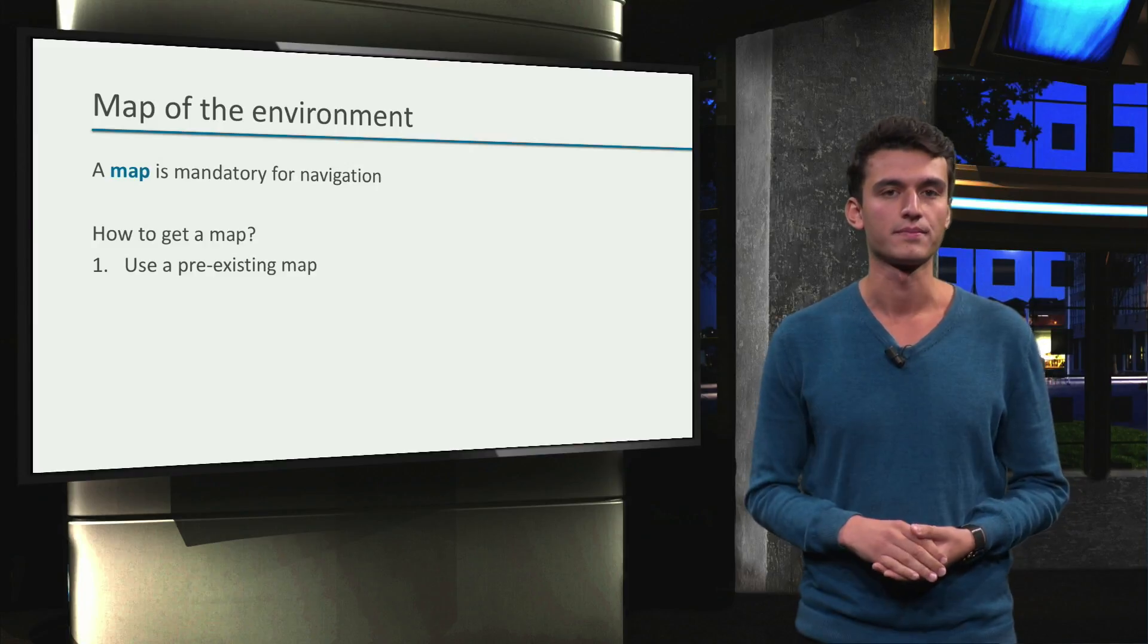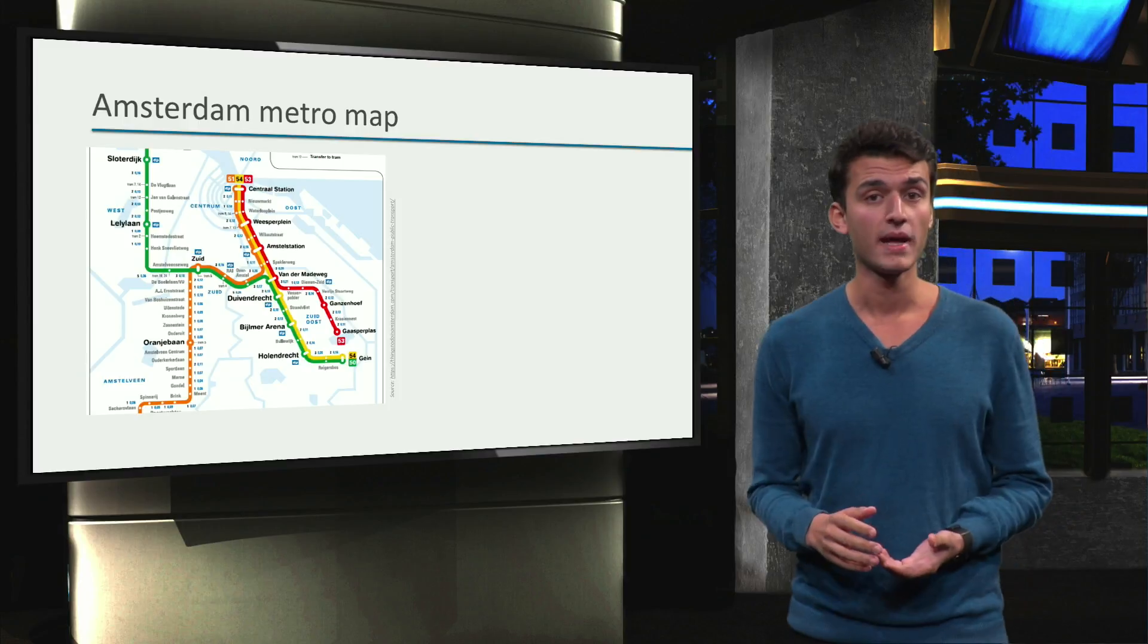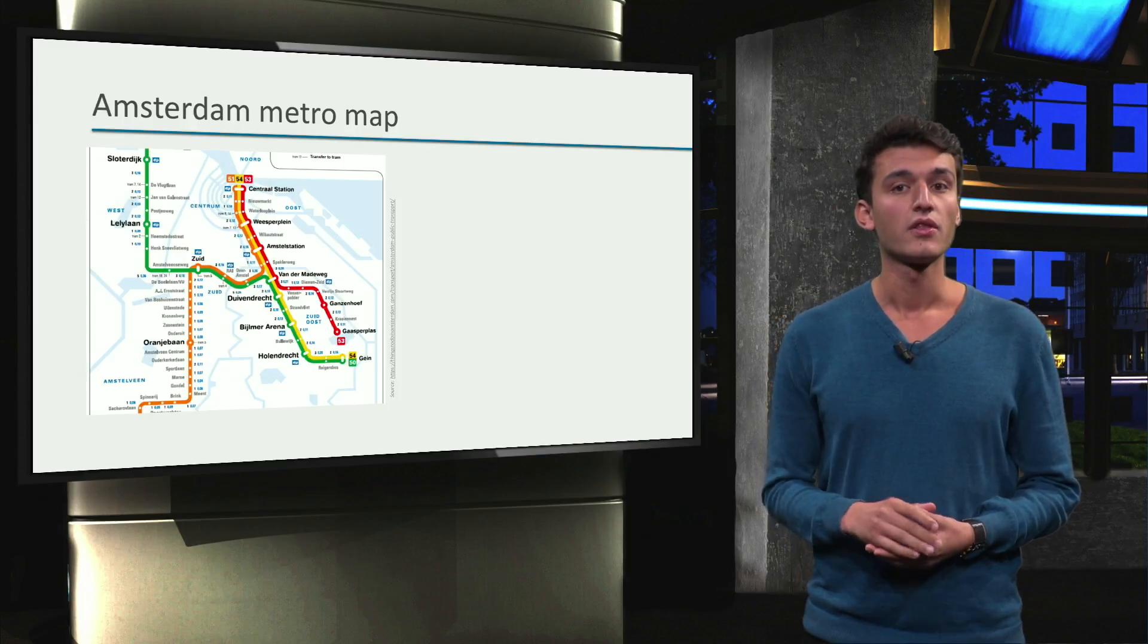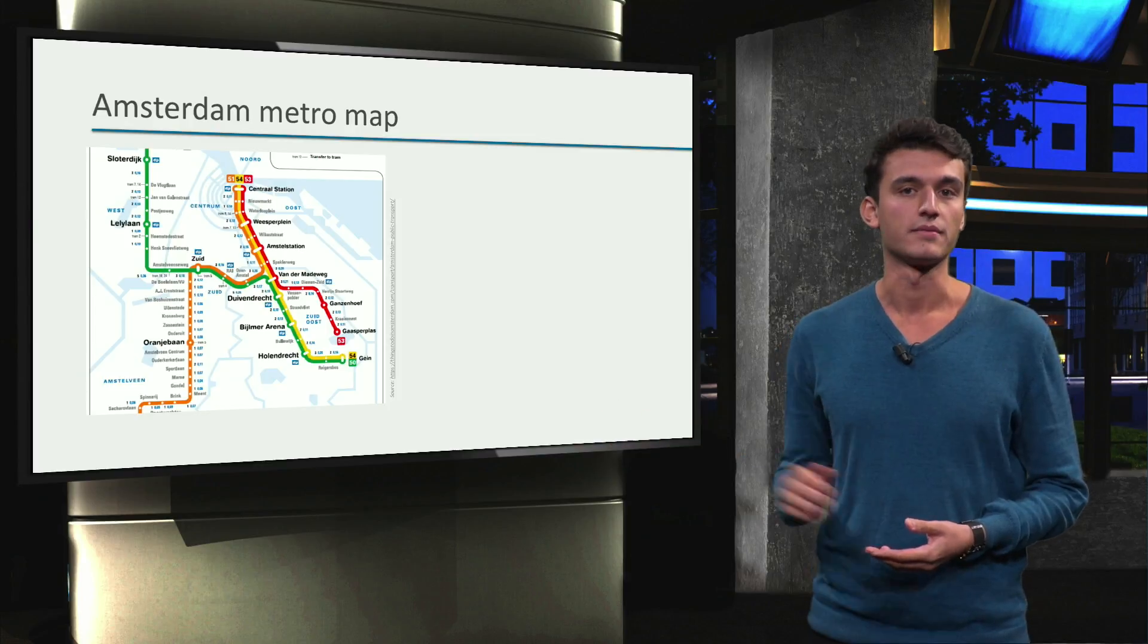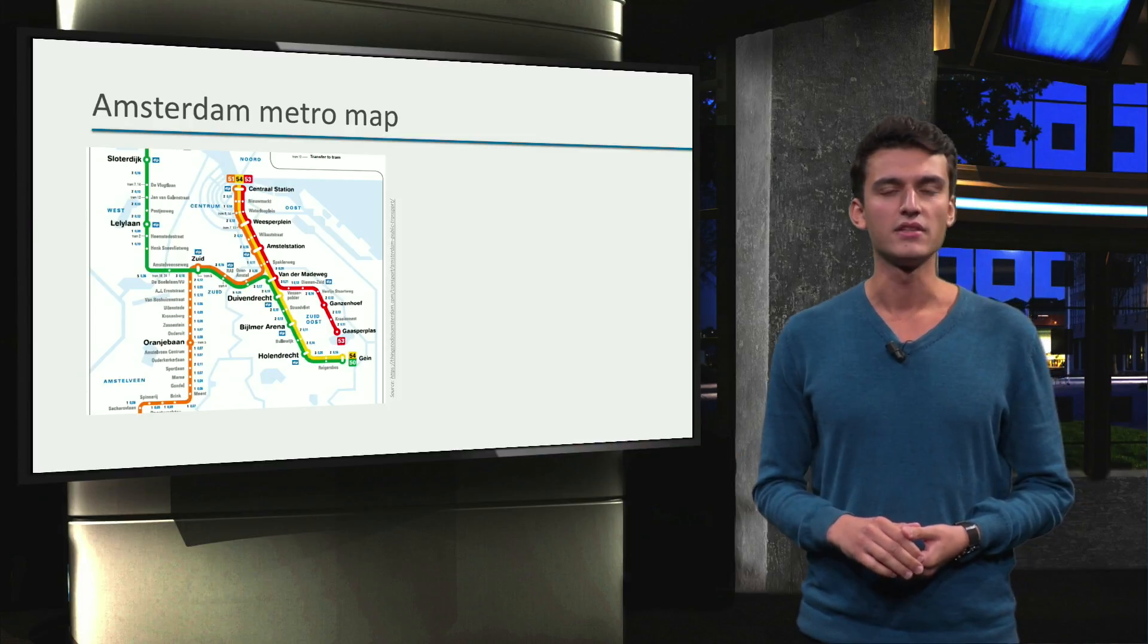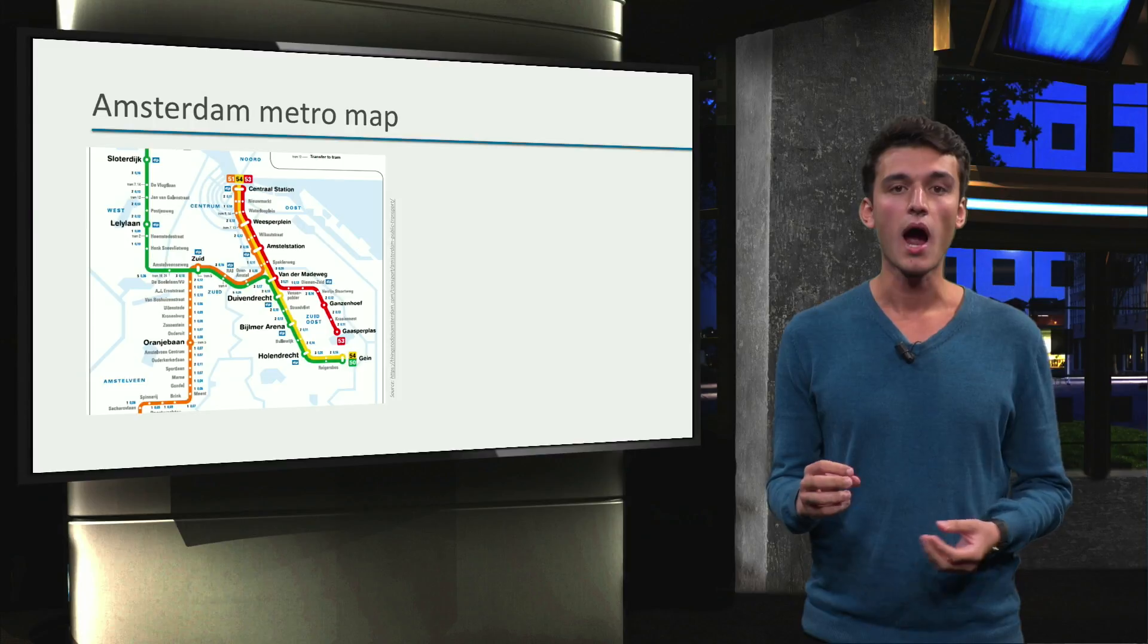Let's look at an example. I'm in Amsterdam and I want to visit some friends. The first option I have is to take the subway. I found this map online. On this map, I can see different stations and how they are connected.